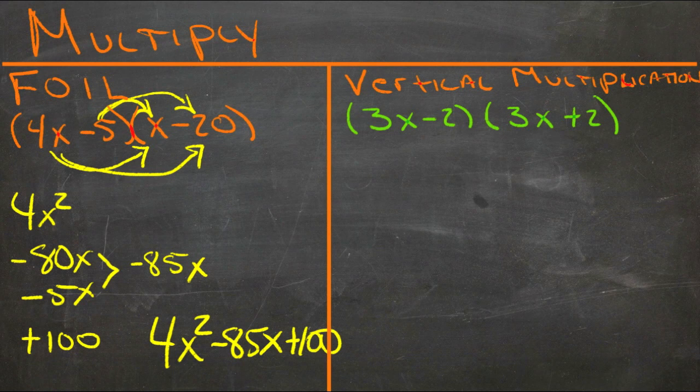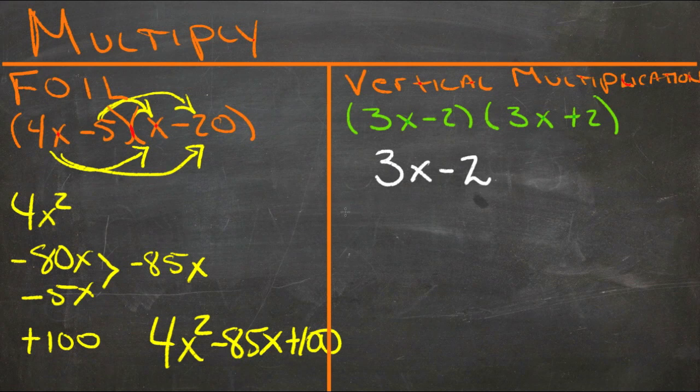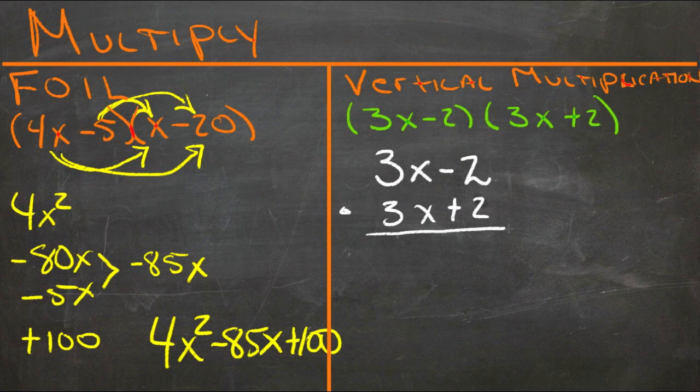Now on the other side here, we're going to do the vertical multiplication method, which is one we didn't do yet. What we're going to do is write these down like you did in elementary school when you were multiplying with multiple digits. Times 3x plus 2. And the process is very similar.